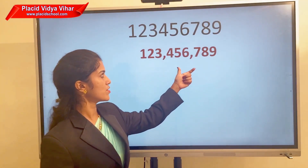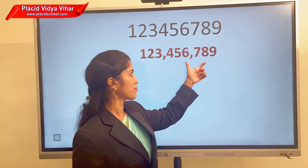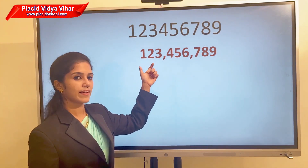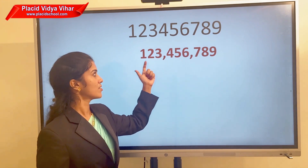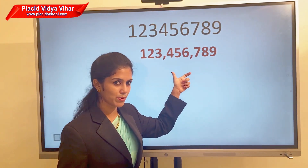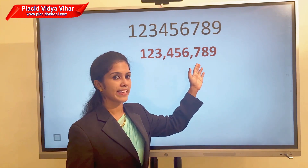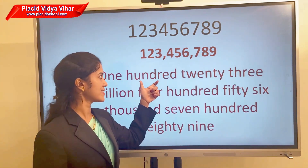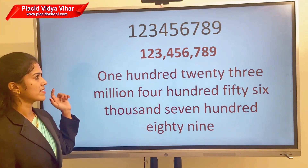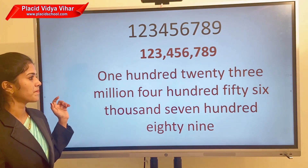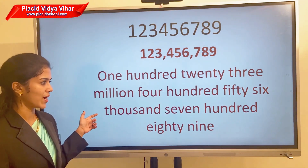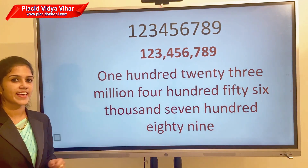Place a comma just before the last three digits, then before the next three digits. The number is 123,456,789. When you write the number name, make sure that you specify the period where you place the comma.